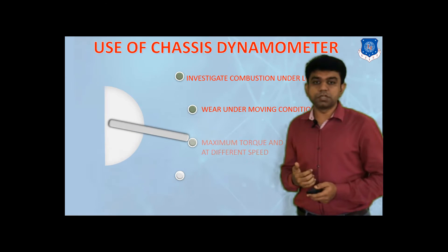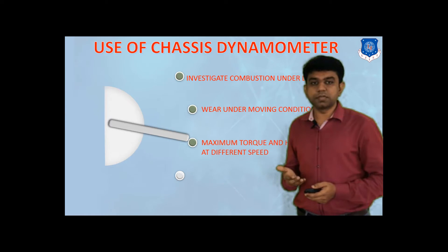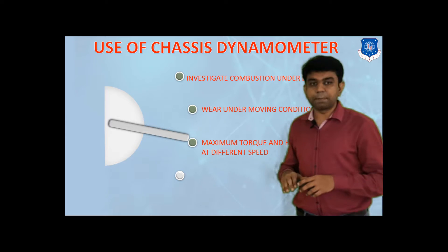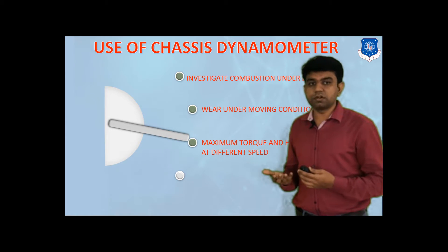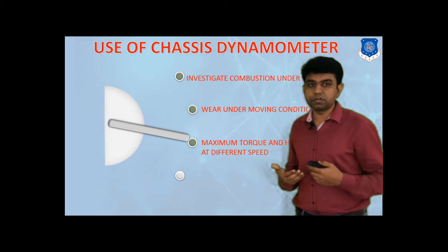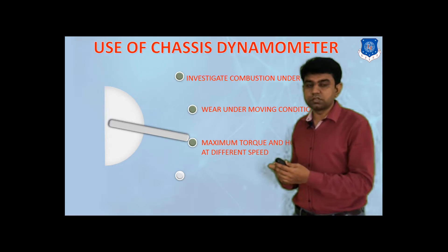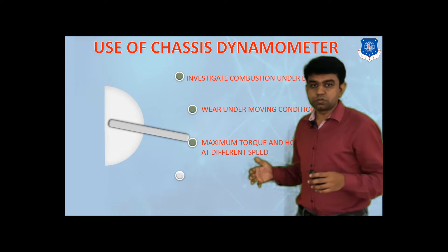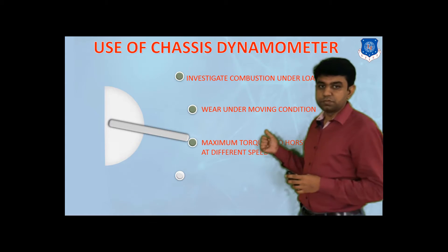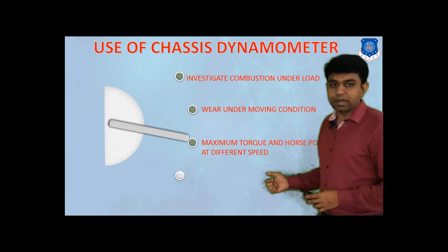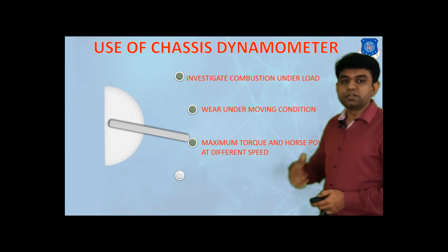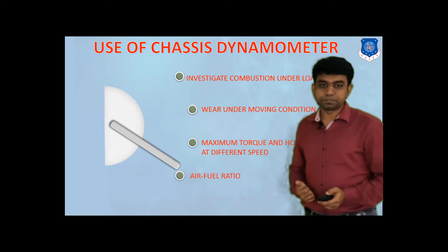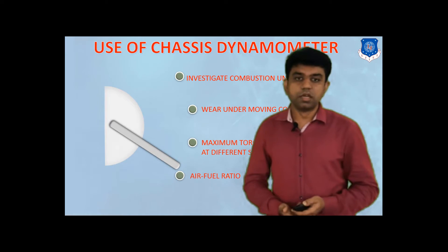You can have an idea about the wear under moving condition, because in this particular chassis dynamometer scenario we are keeping the vehicle steady at one place but replicating real-world road conditions inside the laboratory itself. So you can have an idea about wear under moving condition. Then you can have an idea about the maximum torque and power at different speeds and have a graph of that as well. You can also check the air-fuel ratio.